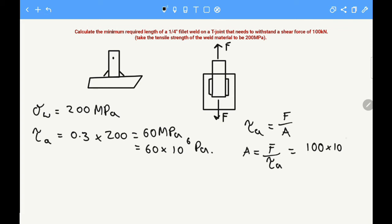So we'll write that as 100 times 10 to the 3 for the kilo, and that's divided by the maximum allowable shear which we said was 60 times 10 to the 6. If you put that in your calculator, the area equals 1.667 times 10 to the minus 3 meters squared.